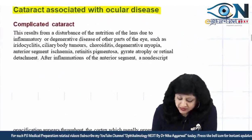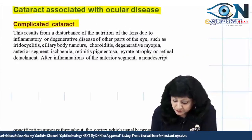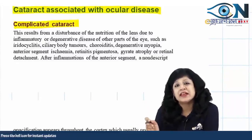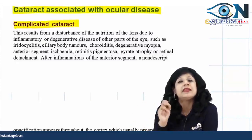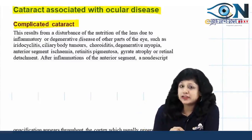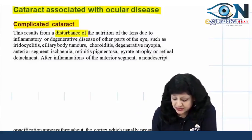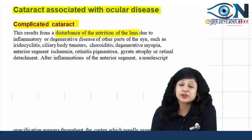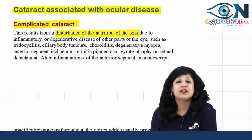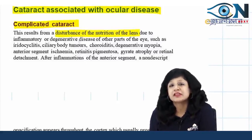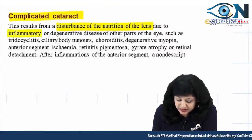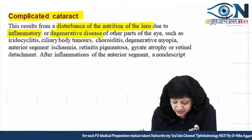Let's start with the complicated cataract. Complicated cataract means a cataract occurring as a complication of some ocular disease, where there is a disturbance of lens nutrition. Basically, whenever you have a problem affecting the nutrition of the lens, that kind of cataract is called a complicated cataract. It can be due to inflammatory diseases or degenerative diseases.